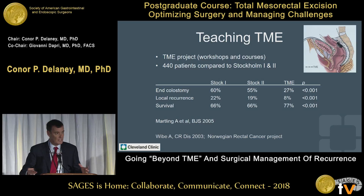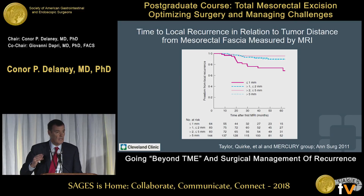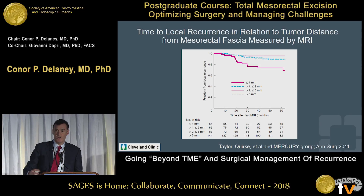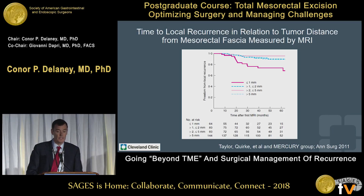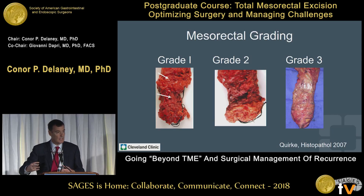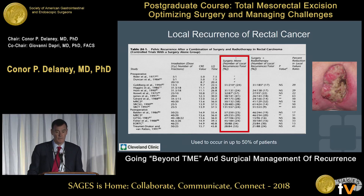That's largely driven by having a negative circumferential margin. The concept of local recurrence being related to the distance of the tumor from the circumferential margin is the key. The key isn't actually just doing a TME — it's doing a TME for somebody having rectal cancer surgery as long as you know by preoperative imaging that the margins will be clear. And if they're not, you go beyond TME, because the goal is that negative circumferential resection margin.